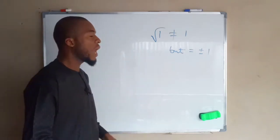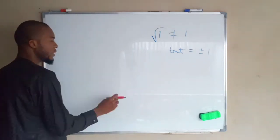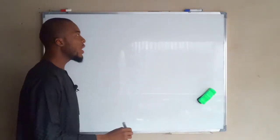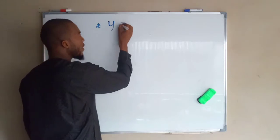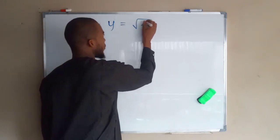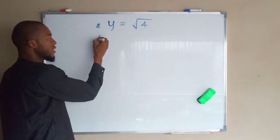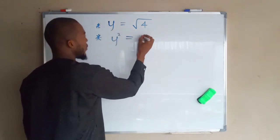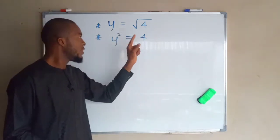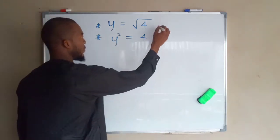Suppose we have two equations. The first one: y equals square root of four. And the second one: y squared equals four.